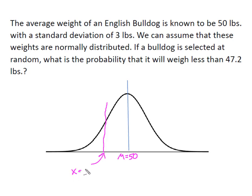So that makes my x value 47.2 pounds, and we want to know the probability that it weighs less than this 47.2 pounds.